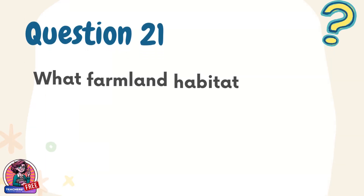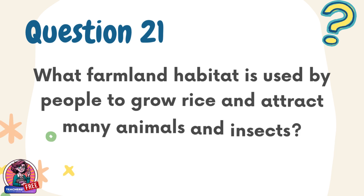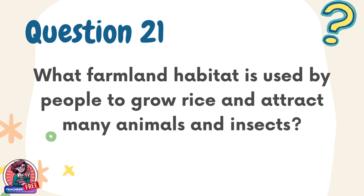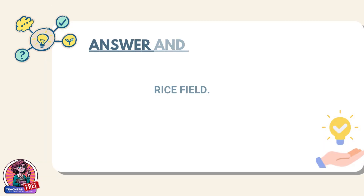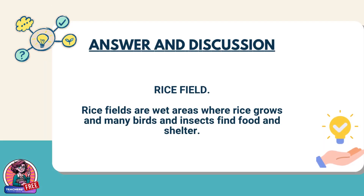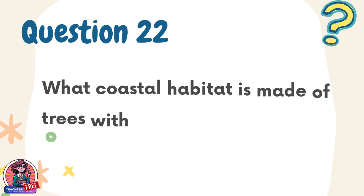Question 21. What farmland habitat is used by people to grow rice and attract many animals and insects? Answer: Rice field. Rice fields are wet areas where rice grows and many birds and insects find food and shelter.